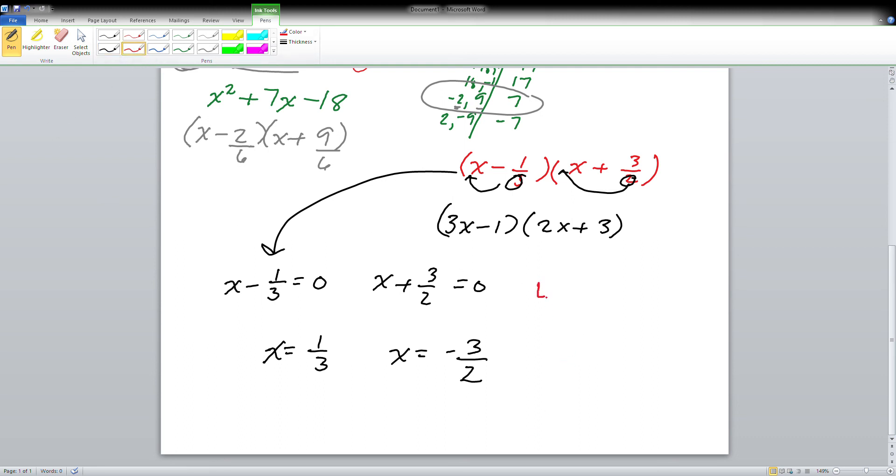And if I solve both of those, I get x = 1/3 and x = -3/2. So that's using zero property. Don't worry, we're gonna factor a bunch and solve a bunch.